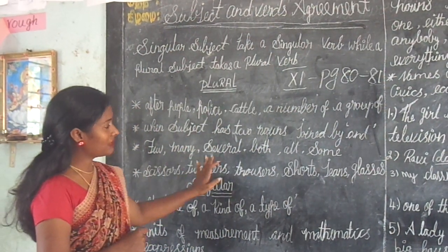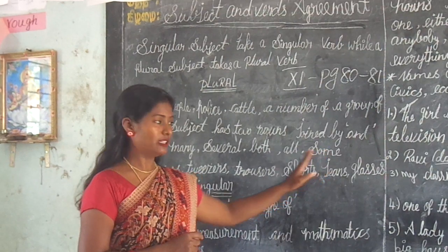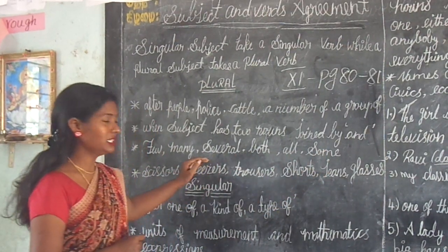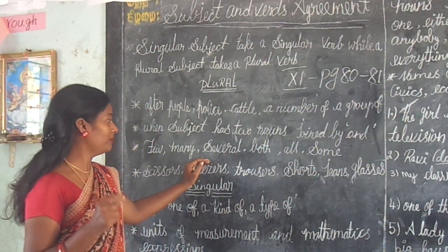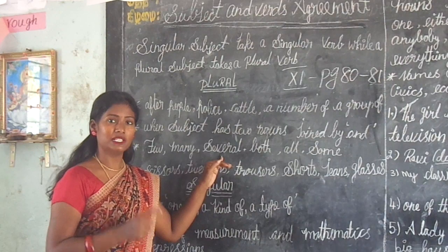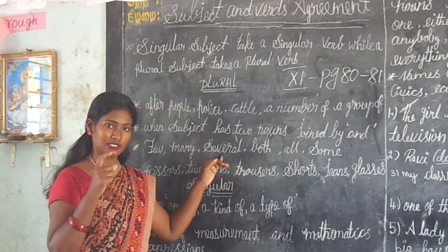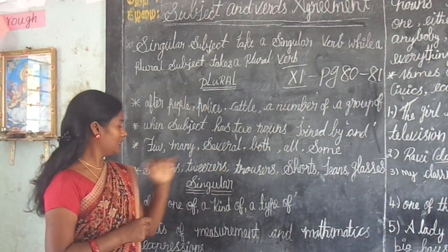Words like few, many, several, both, all, and some — these require a plural verb.